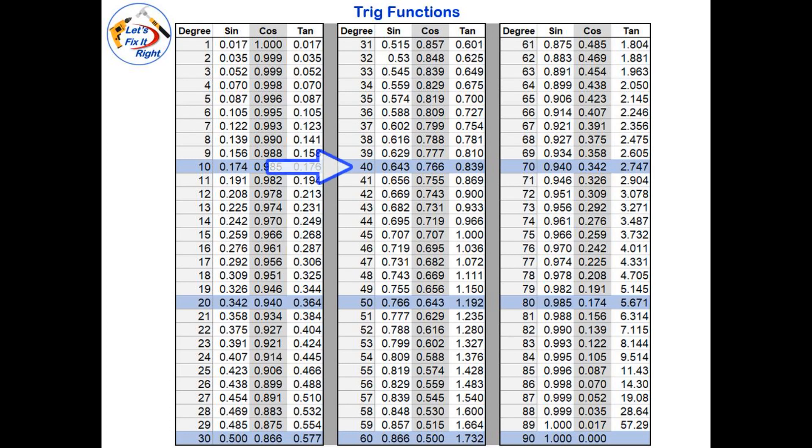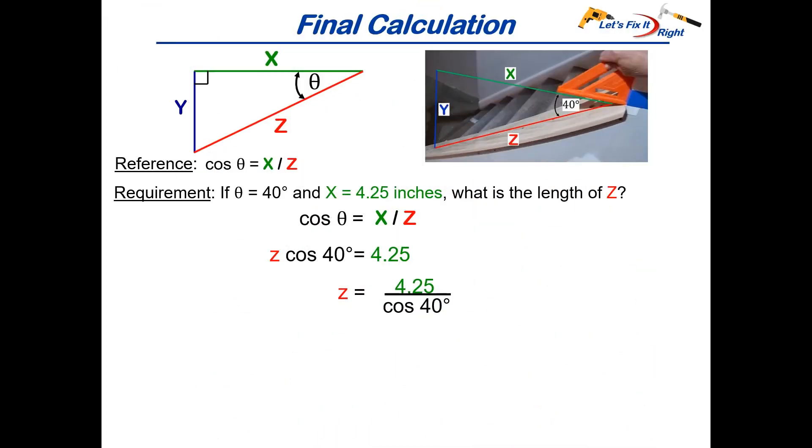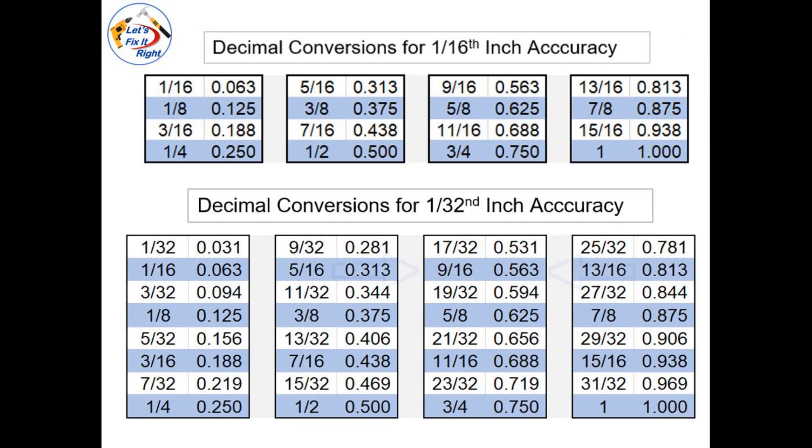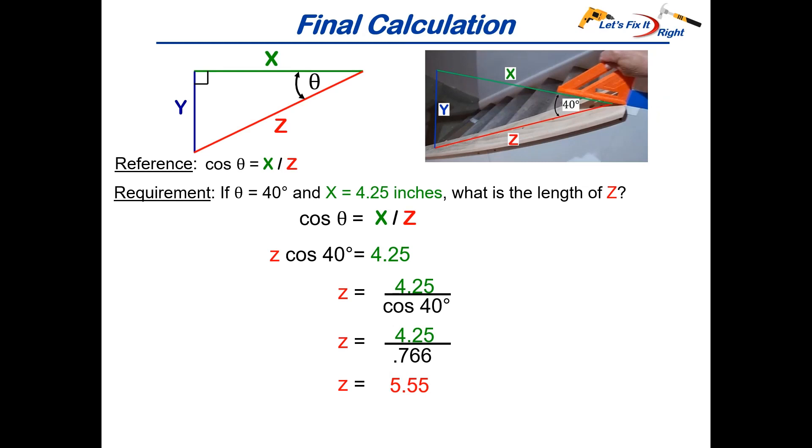Looking up cosine of 40 degrees on our let's fix it right trig table provides 0.766 and completing the division provides a value of 5.55. Lastly looking up 0.55 in our decimal conversion table provides us 9/16 of an inch or a total of 5 and 9/16 of an inch for measuring purposes.